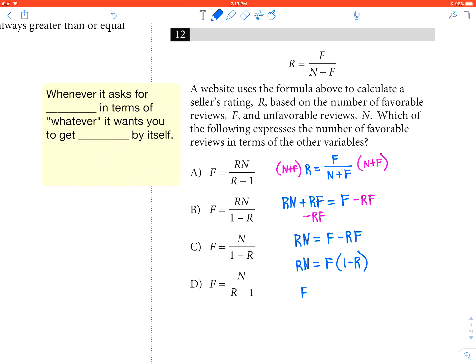And then I'm just going to divide and F equals RN over 1 minus R, which makes the answer choice B.